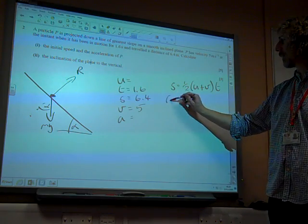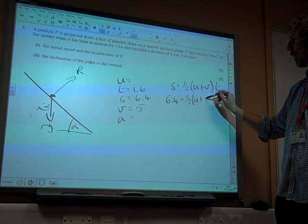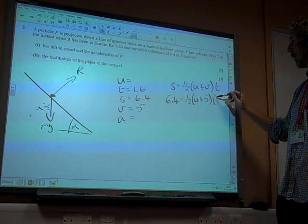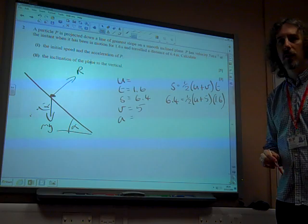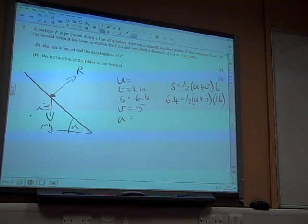We can find U based on that. That gives us 6.4 is half of U plus 5 times 1.6. And we're going to rearrange that. I should have brought myself a calculator. This isn't how I did it.